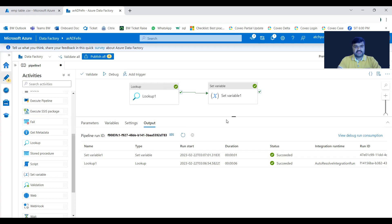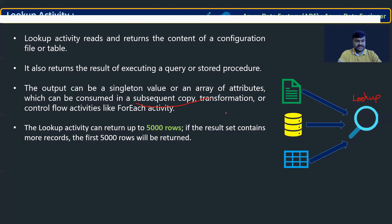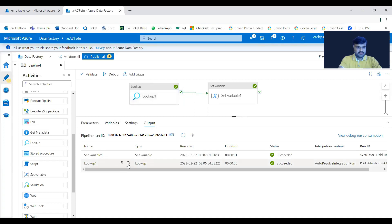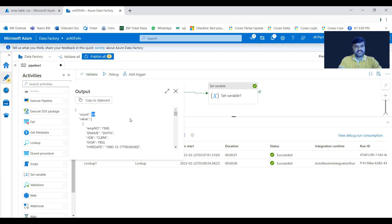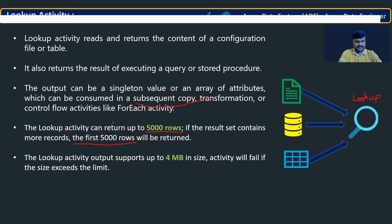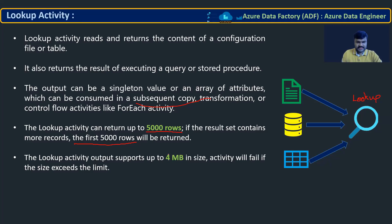An important limitation: the lookup activity can fetch a maximum of 5000 rows. If your file or table has more than 5000 records, it will only return the first 5000. Here, 14 records were fetched because 14 is less than 5000. There is also another critical limitation: the total size of data fetched must be less than 4 MB. If 5000 records together exceed 4 MB, the activity will fail.